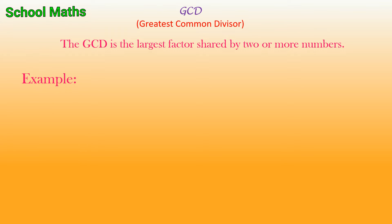I am going to explain GCD by taking two random numbers, 100 and 150. Let us find all the divisors of the given two numbers until they cannot be further divided.